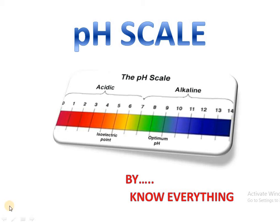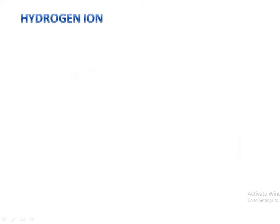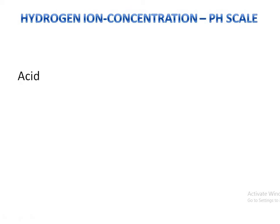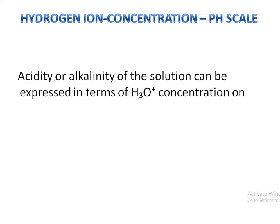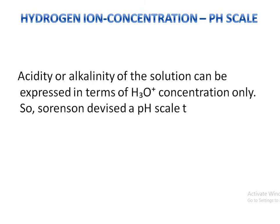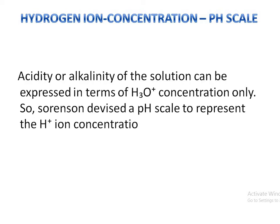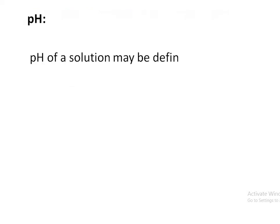The pH scale is related to hydrogen ion concentration. The acidity or alkalinity of a solution can be expressed in terms of hydronium ion concentration. Sorensen devised a pH scale to represent the H+ ion concentration of a given solution. Any solution which is acidic or basic can be expressed by the use of the pH scale.